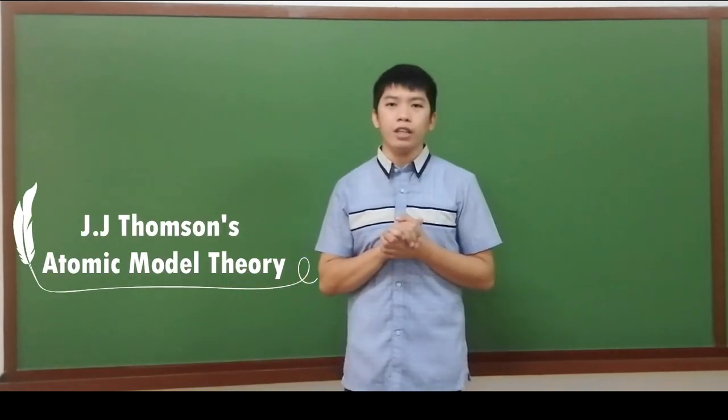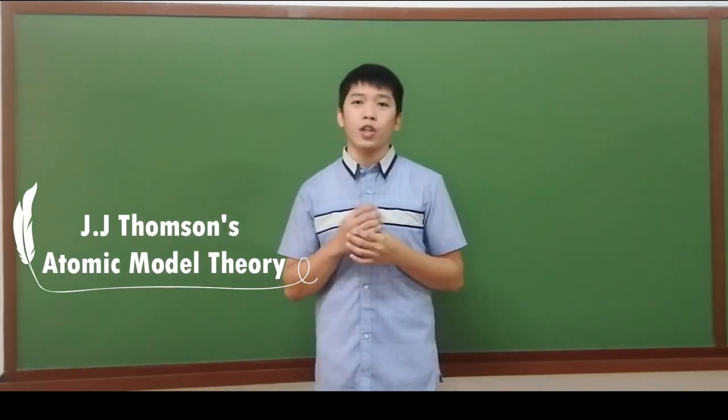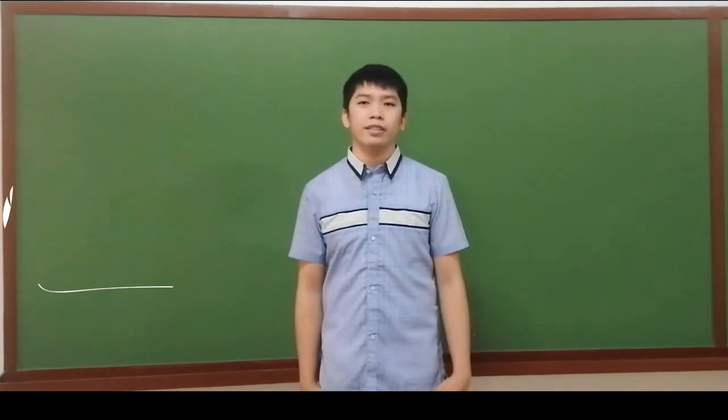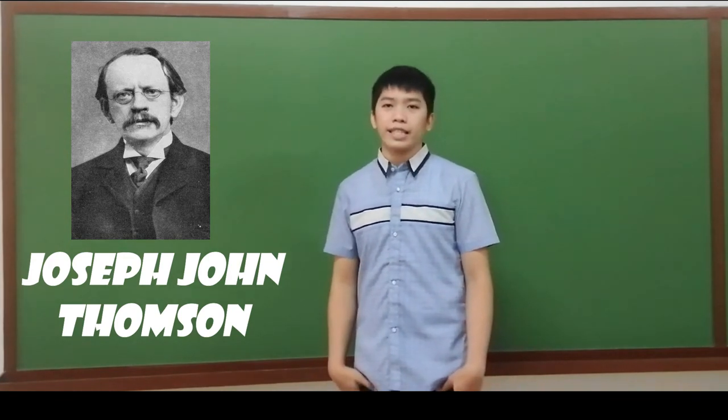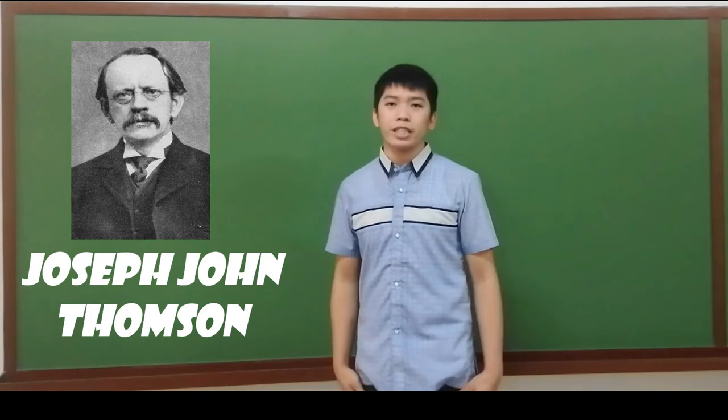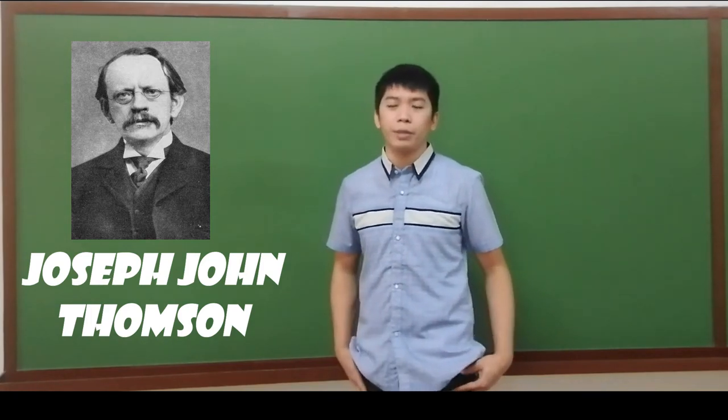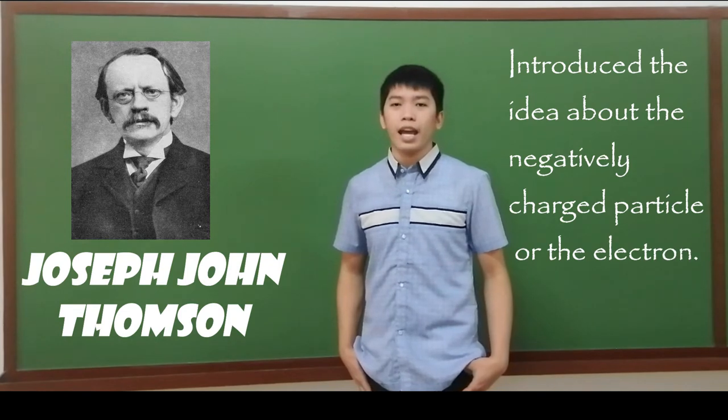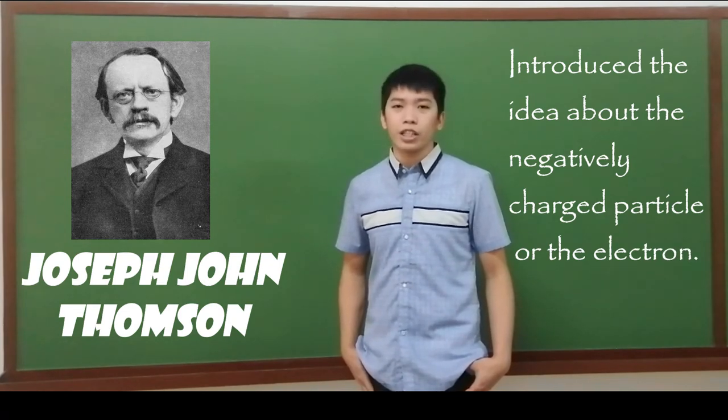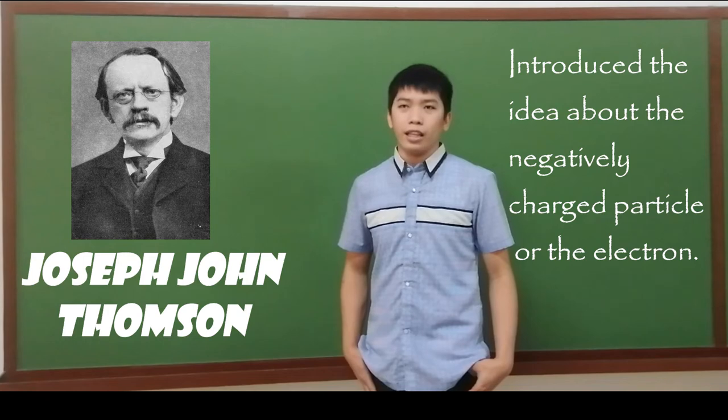We also have the atomic model theory of Joseph J. Thompson or J.J. Thompson. In 1897, J.J. Thompson, an English scientist, provided the first clue that an atom is made of even smaller particles. He also introduced the idea about the negatively charged particle or the electron.